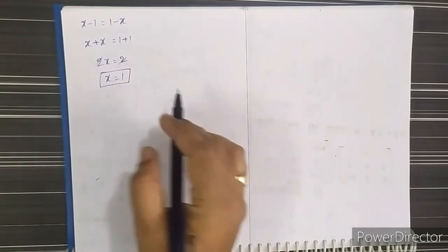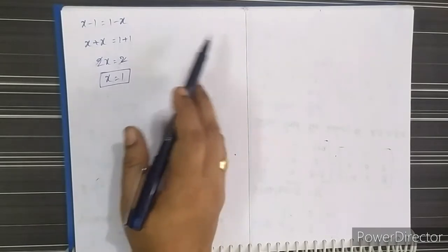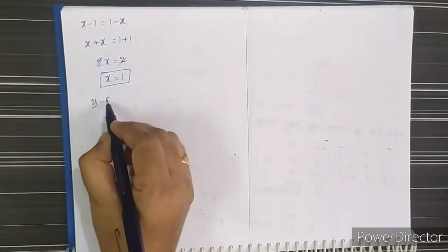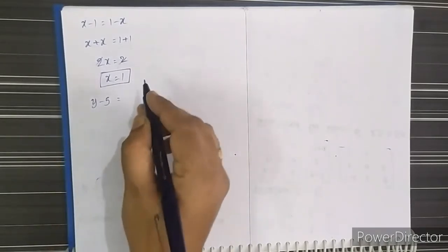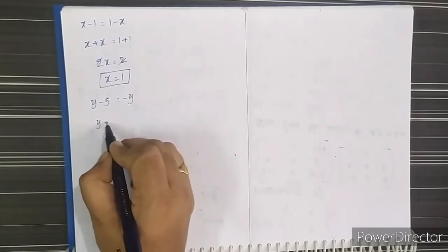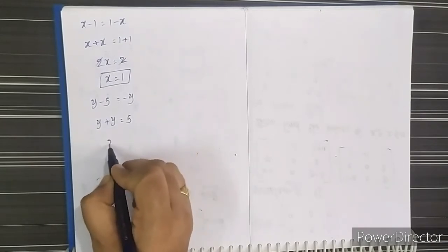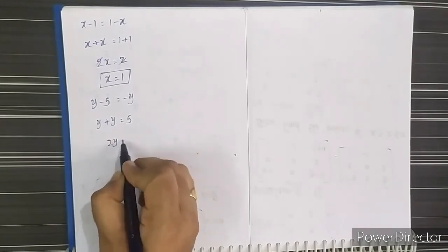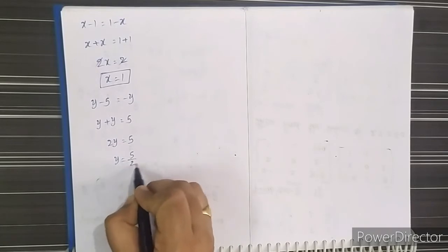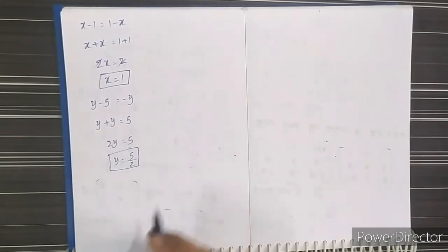For the third element in the first row: y - 5 equals -y. Then y + y equals 5, giving 2y equals 5, so y equals 5/2. This is the y value.